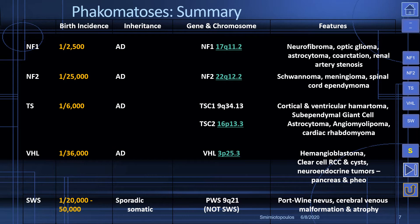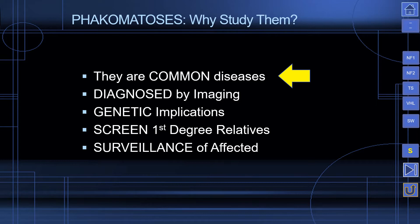This is just a chart summarizing the abbreviations for the diseases, their birth incidence, mode of inheritance, which gene and chromosome is involved, and the prominent and important clinical features for each of the syndromes we're going to be discussing today.